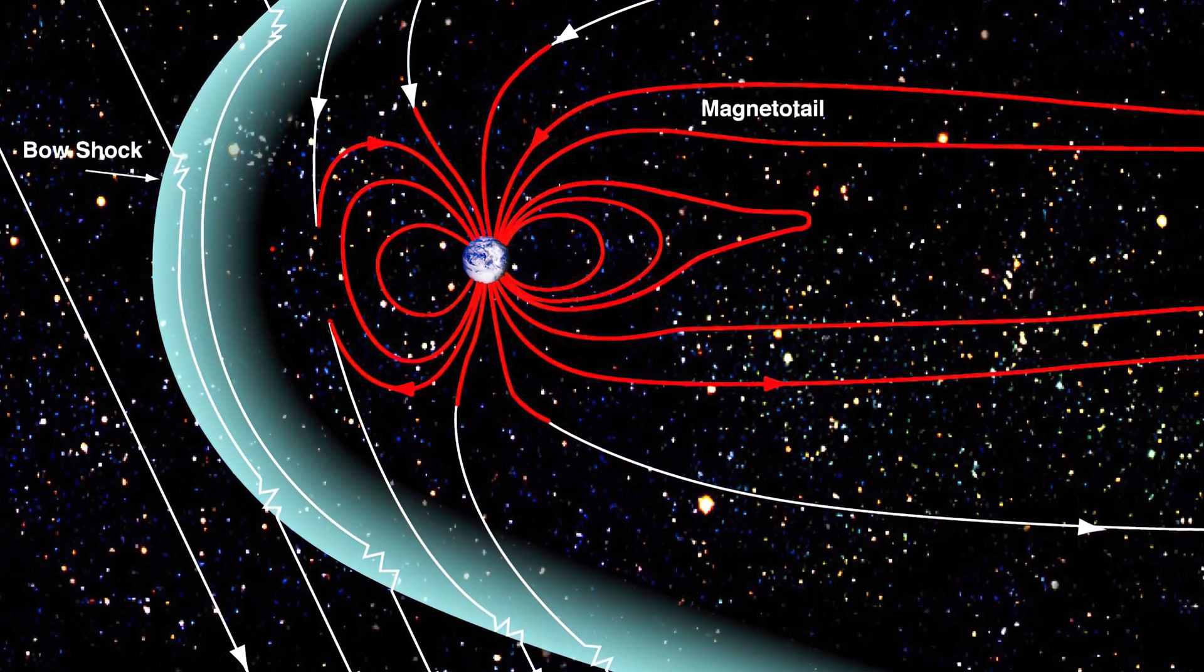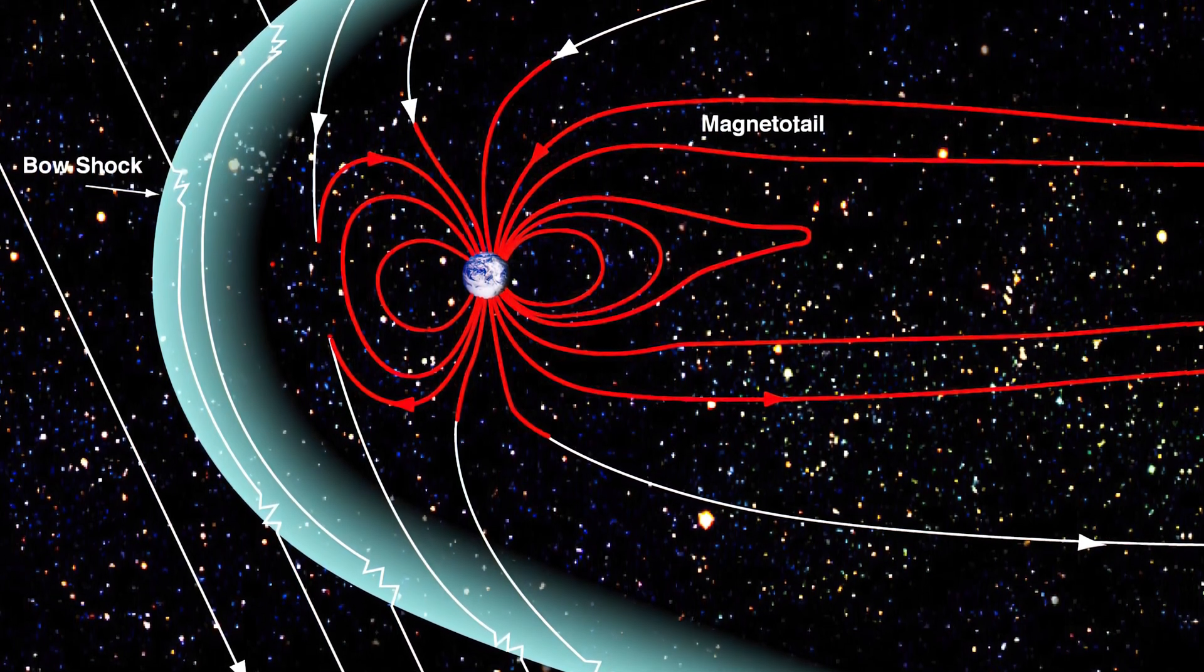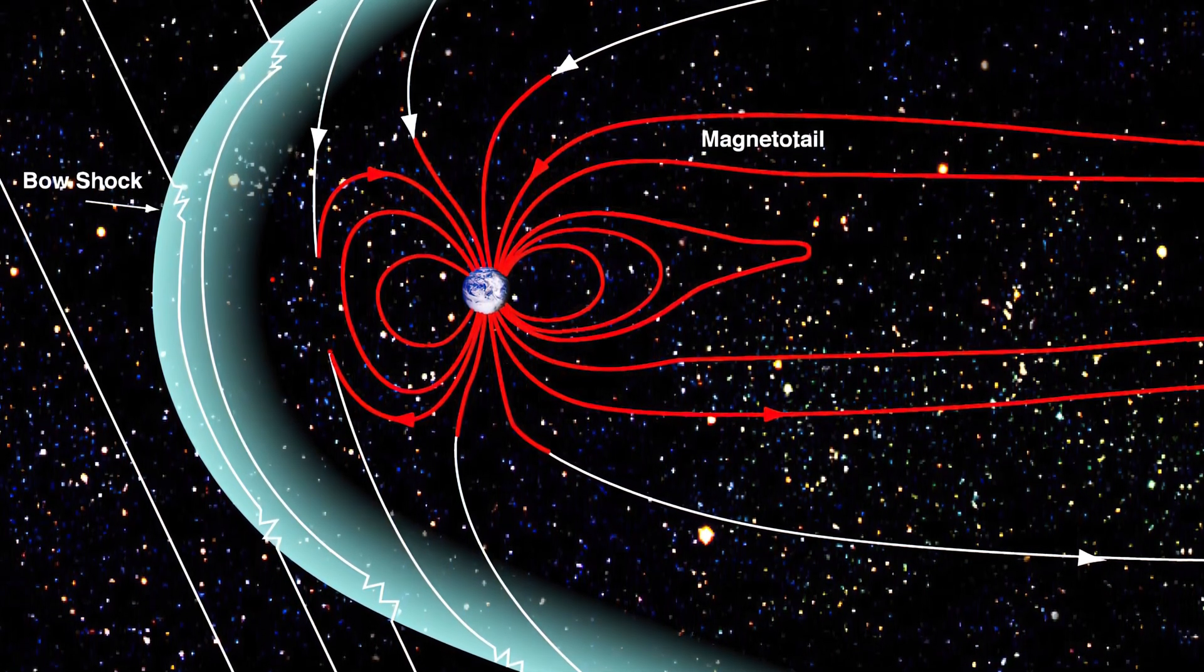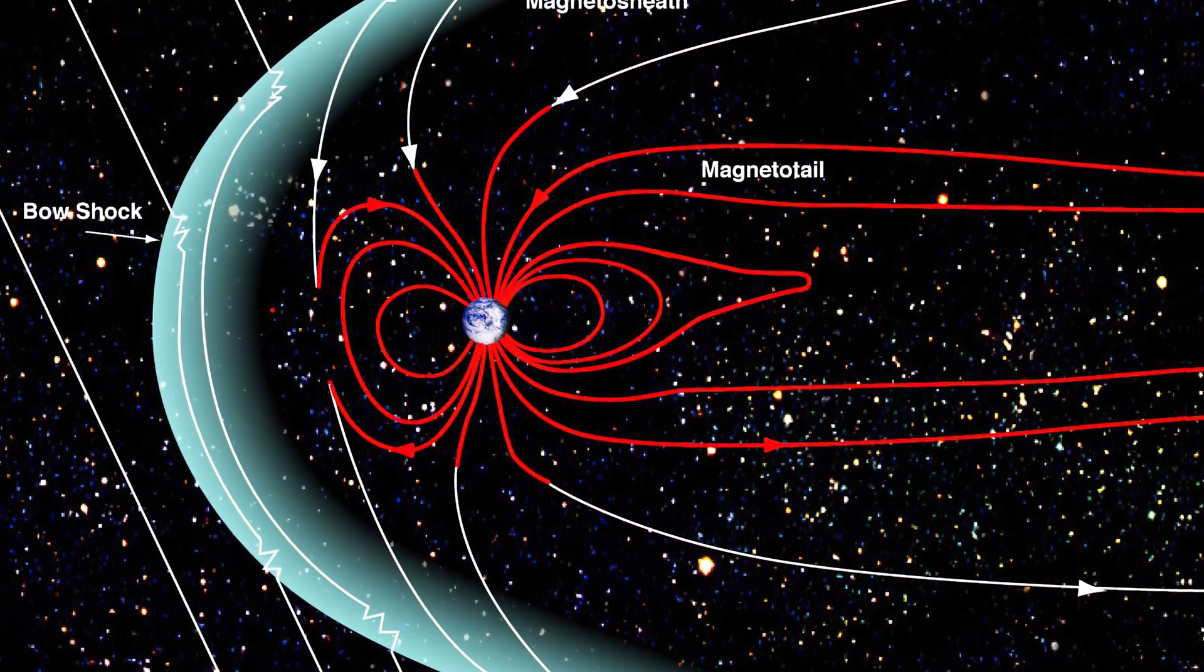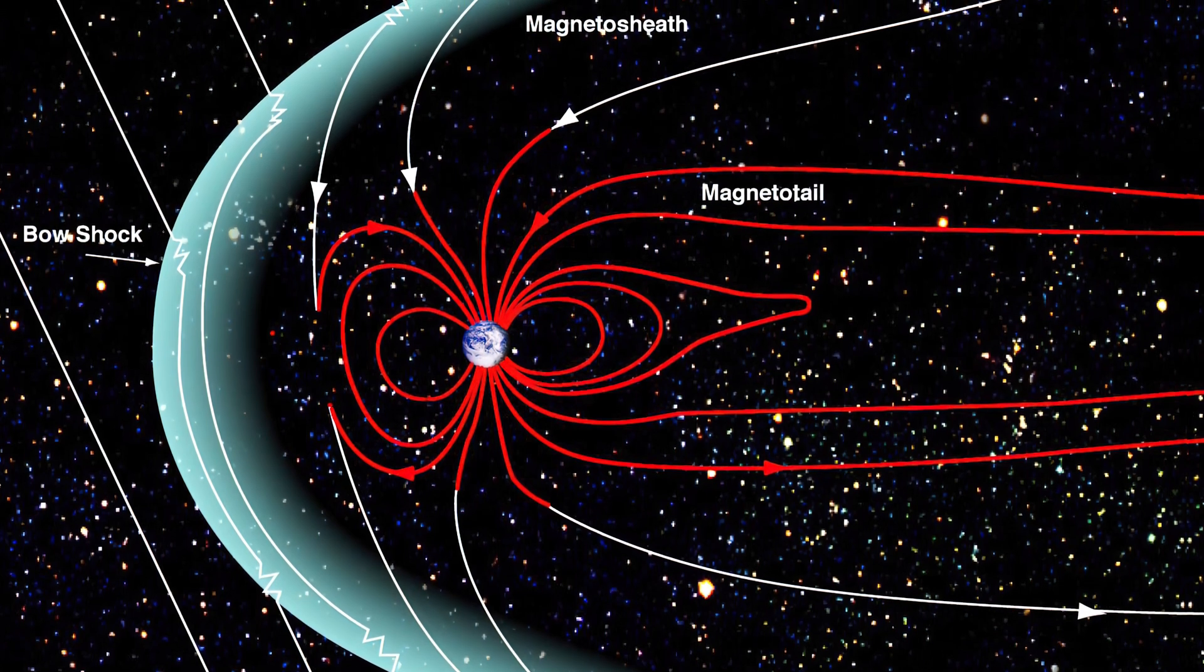Every full moon, Luna passes through the magnetotail for about nine days. The moon can be affected by this interaction, sometimes leading to lunar dust storms, electrostatic discharges, and other effects.